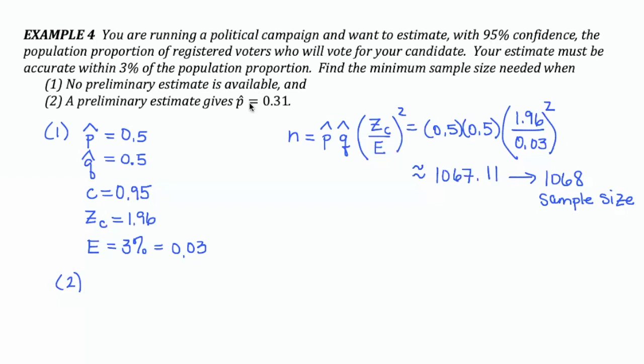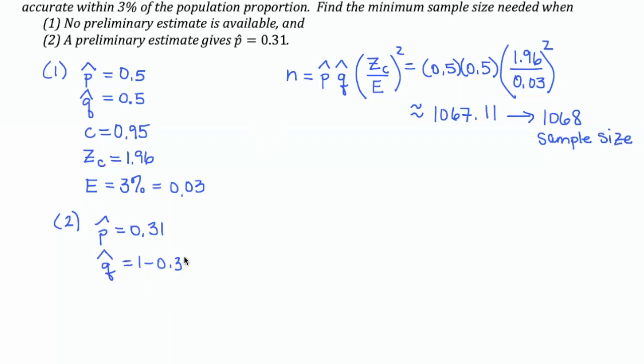Now the only difference in doing part 2 is again, we must have some previous polling data that allows us to believe that p-hat, the likelihood that registered voters will vote for this candidate, is 31% or 0.31. So my q-hat, I do 1 minus this value, which gives me 0.69 for q-hat. And I substitute that again into the exact same formula I used above to determine my sample size. I do p-hat times q-hat. The fractional portion is going to be the same: 1.96 over 0.03 squared.